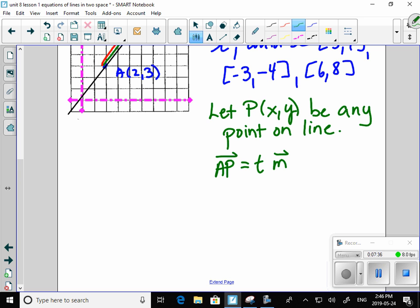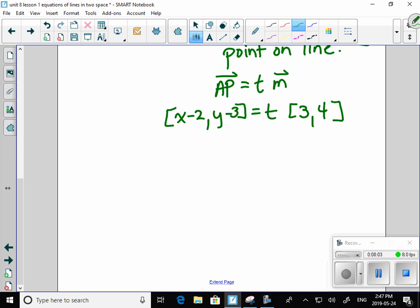So from that, I can say AP is, point P is xy. Point A is 2, 3. So I have to have x subtract 2 because A is 2, 3. Y subtract 3 is some scalar multiple of my direction vector. That is a vector equation of a line. It's not its prettiest form, but that's where it comes from.